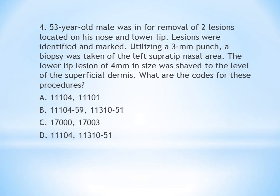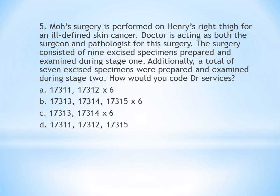For the biopsy code, identify the type of biopsy and number of lesions — it is a punch biopsy of a single lesion, giving code 11104. For the shaving, identify the site (lower lip), body group, and diameter to get code 11310. Modifier 59 is applied because two distinct procedures are performed, and modifier 51 is applied because multiple procedures are performed. The answer is B.